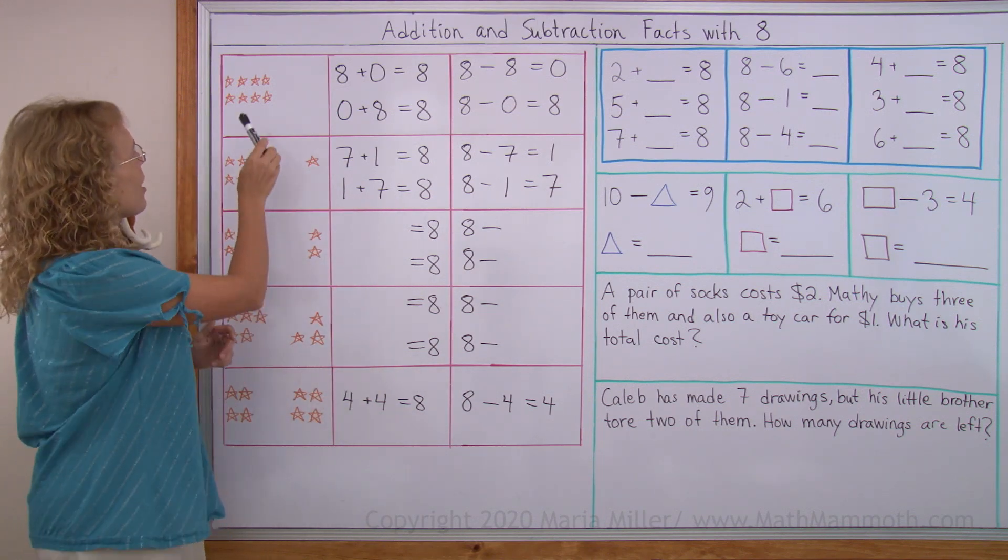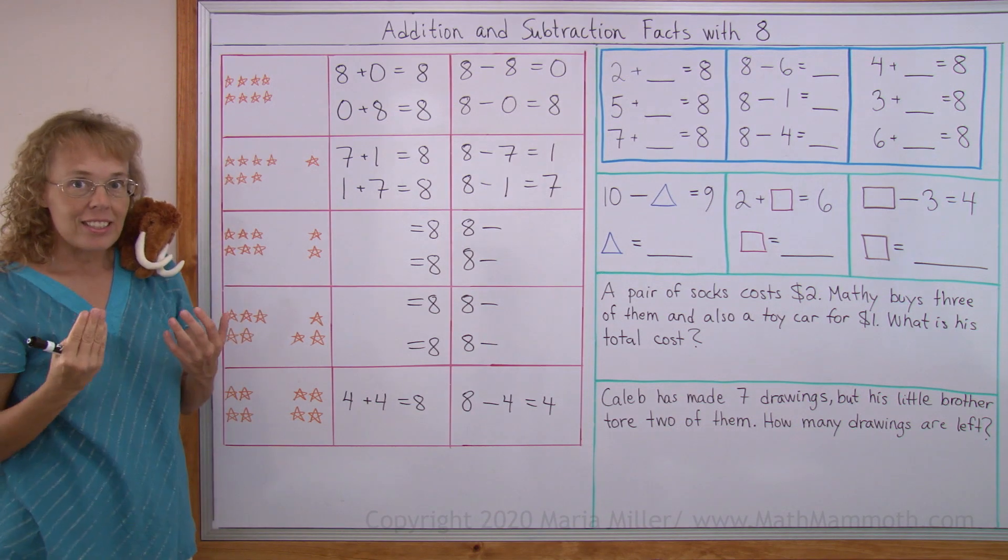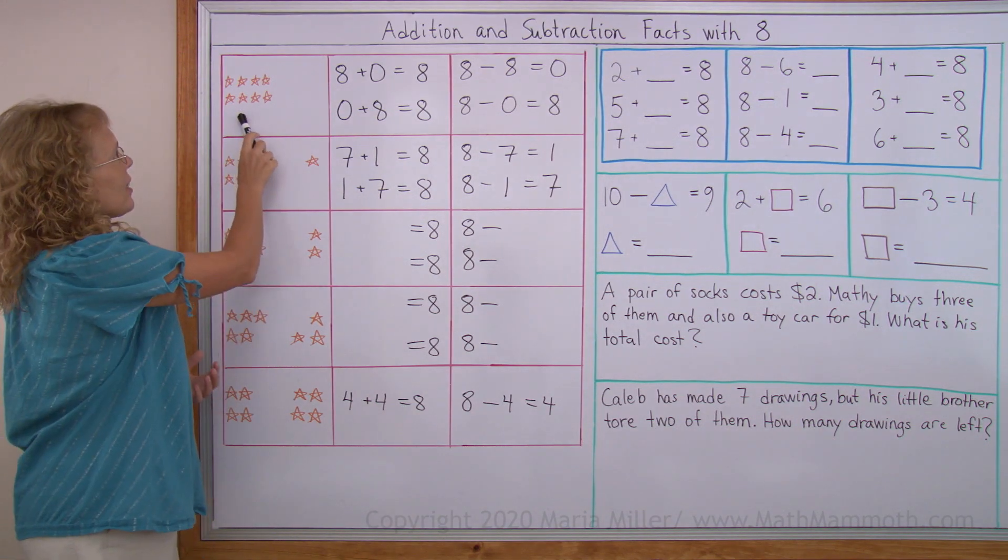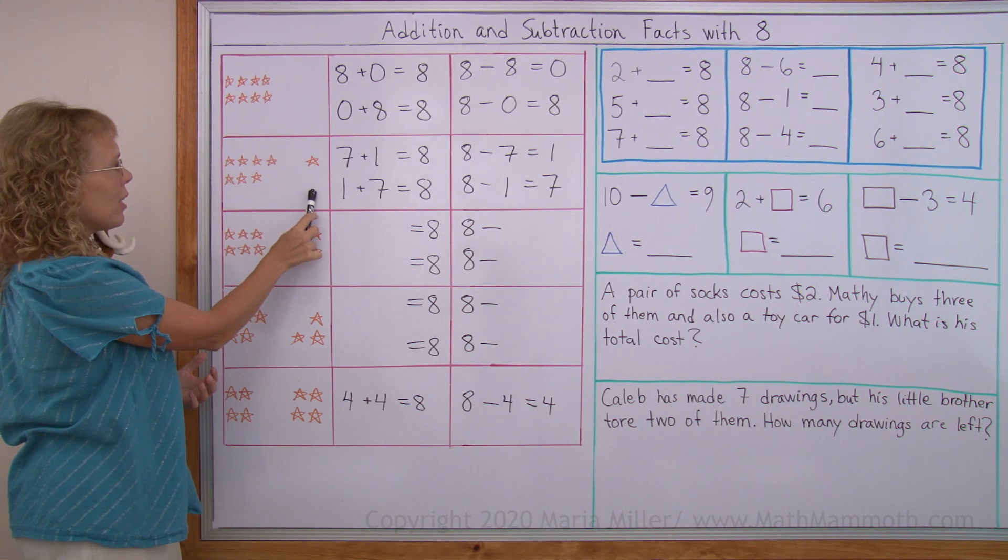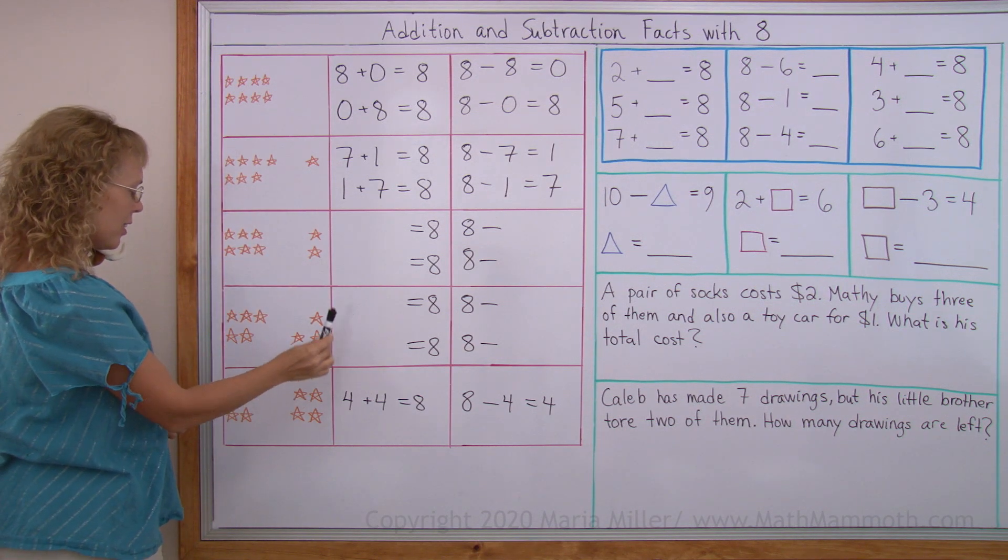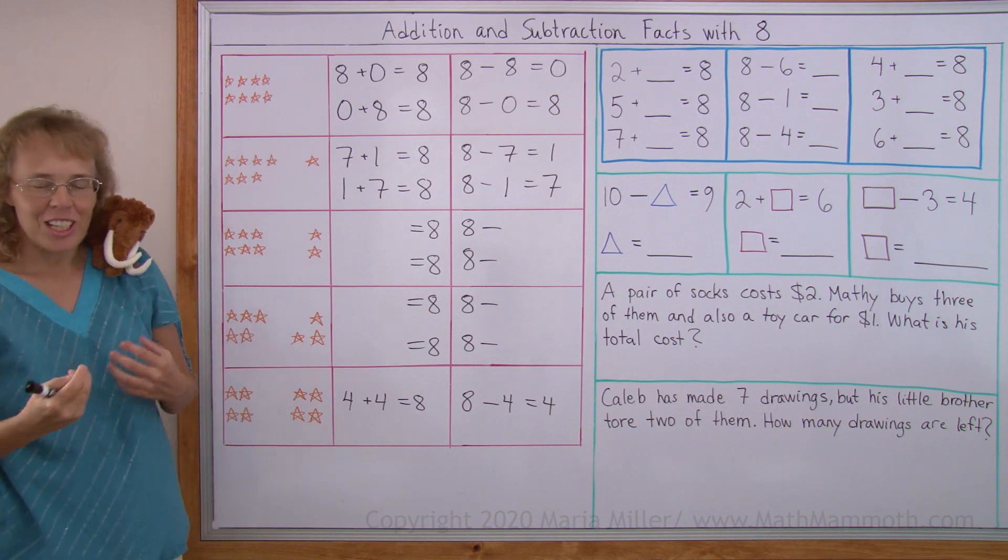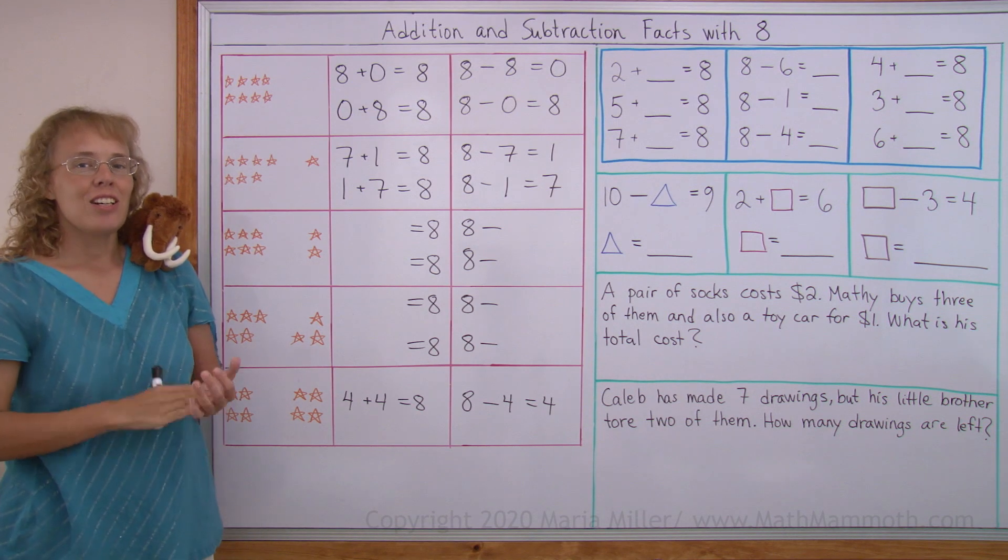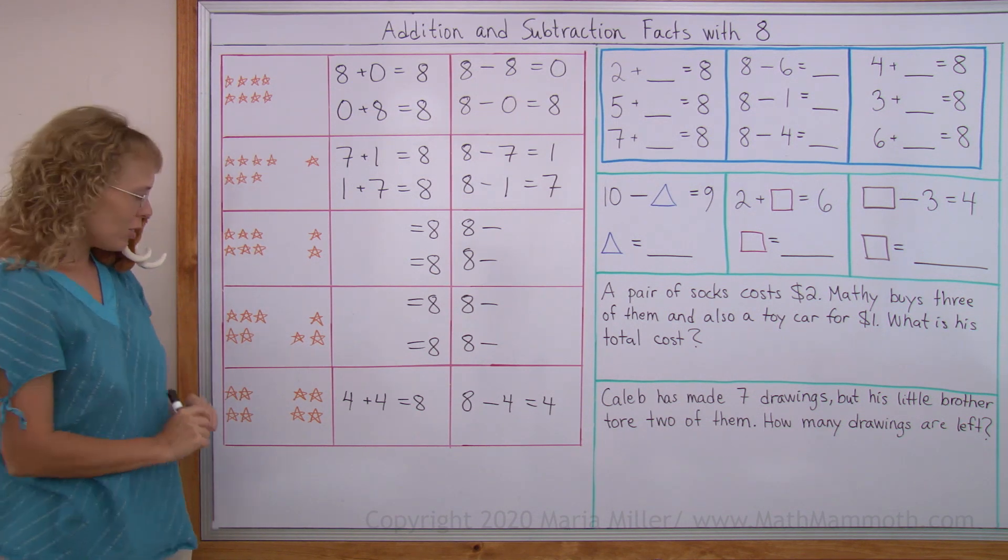Notice over here, we have 8 in two groups: 8 and 0, 7 and 1, over here 6 and 2, then 5 and 3, and 4 and 4. Those are all the possible ways of making 8 with two numbers or two groups.